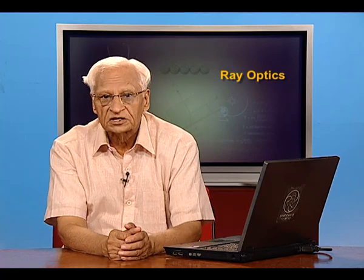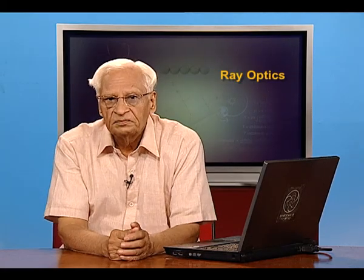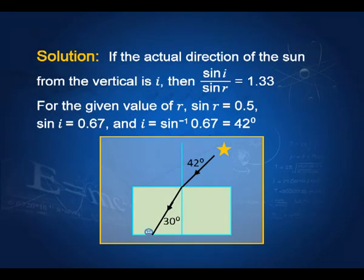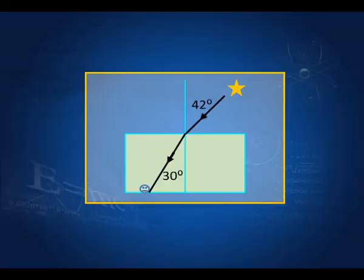The light is going to suffer refraction as it enters water. I have shown the actual direction of the sun and the bent ray which reaches the person. If the actual direction of the sun from the vertical is i, then sin i / sin r = 1.33, the refractive index of water. For r = 30 degrees, we calculate i, and we find i is equal to roughly 42 degrees. So the sun rays are coming at 42 degrees to the vertical, but because of refraction, the person inside water sees them at 30 degrees.